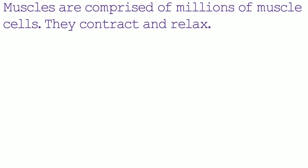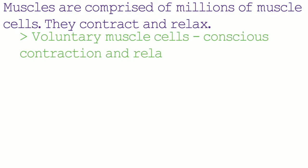One type of muscle is voluntary muscle cells. Voluntary muscle cells means that the contraction of the muscle is down to the conscious thought process of the brain. When the brain wants to contract the muscle, the muscle contracts. When the brain wants to relax the muscle, the muscle relaxes. An example would be me moving my arm — my brain tells my muscle cells in my arm to contract and my arm moves. The word voluntary is used because my brain consciously tells the muscles to contract or relax.